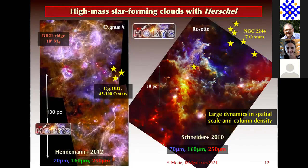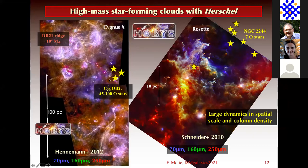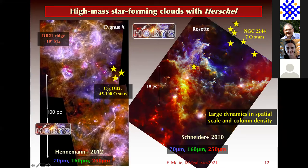These are Herschel images made as part of the HOBYS large program. There are lots of structures. The reddish complex is at 250 microns, mainly focused on dense clouds — yellow and reddish structures show the cold components. The bluish parts at 70 microns show the impact of OB stars on diffuse clouds around HII regions. The strength was the large dynamic range in spatial scale: from 100 parsec structures down to below 0.1 parsec, and also a very large dynamic range in column density.